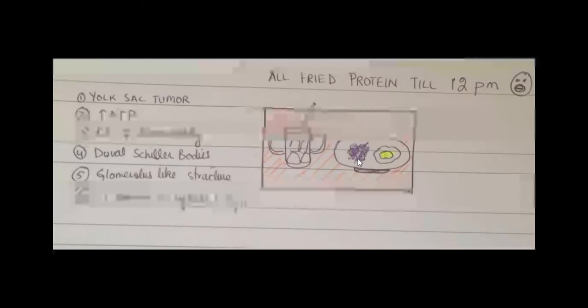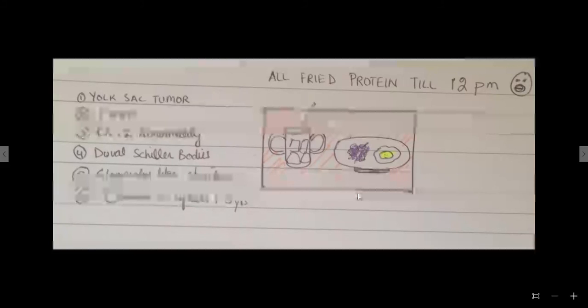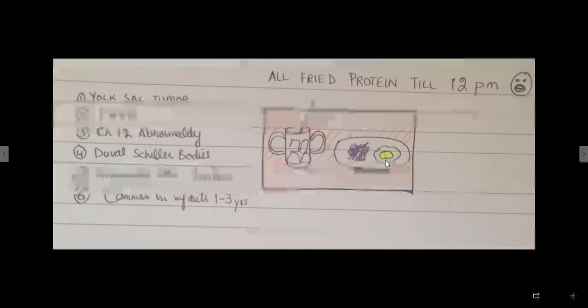So the grapes are showing that these dual Schiller bodies are like the primitive glomerulus. So these are the only few points that are more important for the exam. And I'll repeat it again that the yolk sac tumor as shown by the yellow yolk of my egg is associated with raised alpha fetoprotein or fried protein.